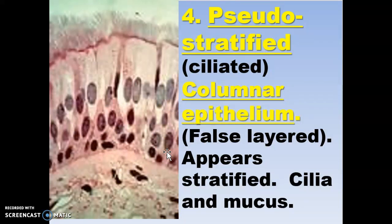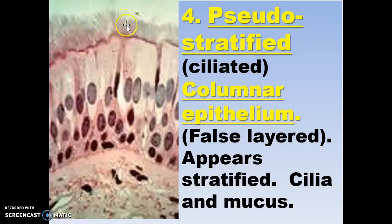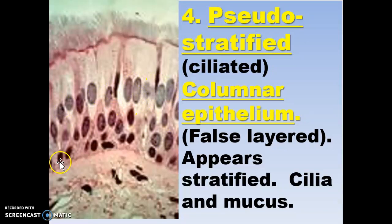Pseudostratified ciliated columnar epithelium. The little hairs on top are cilia — they constantly flush the mucus down. There are mucus neck cells within these columnar cells. They're called pseudostratified because you've got nuclei at this layer, nuclei at this layer, and nuclei at the base layer. So the nuclei look like they're stratified, but really the cells are columnar, and they're not stratified.